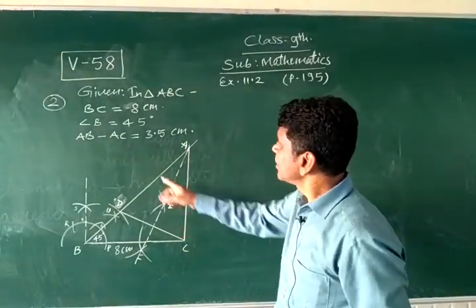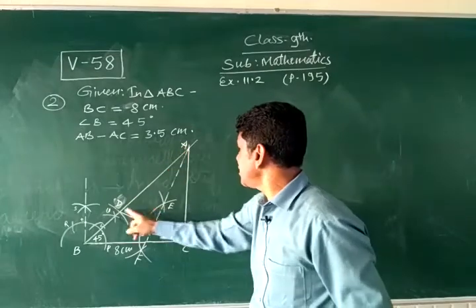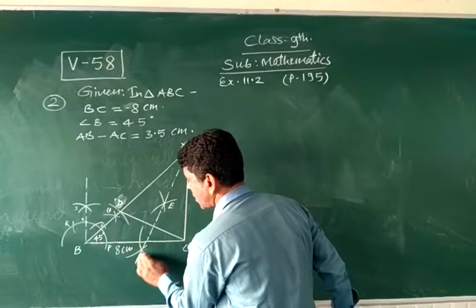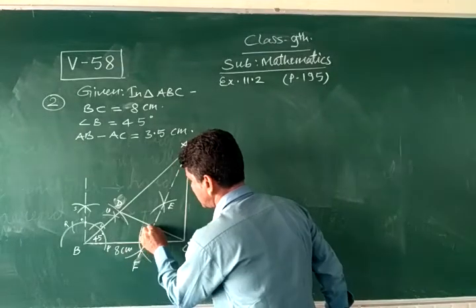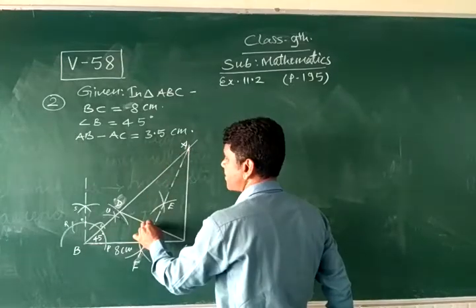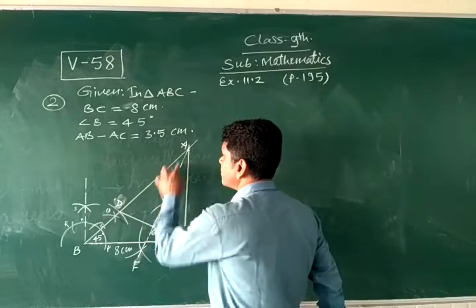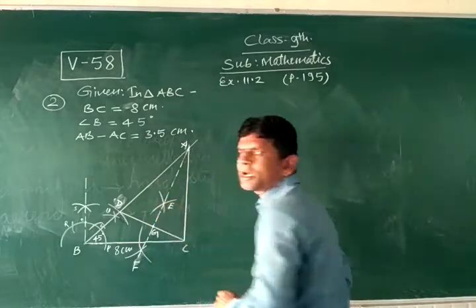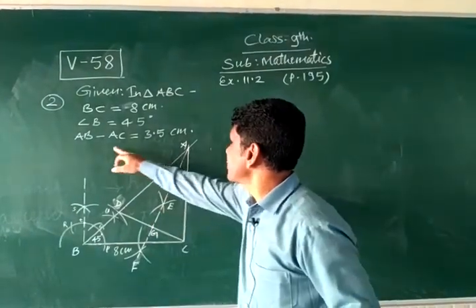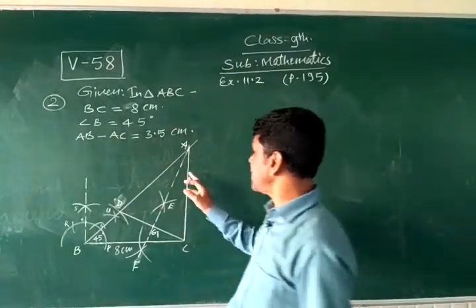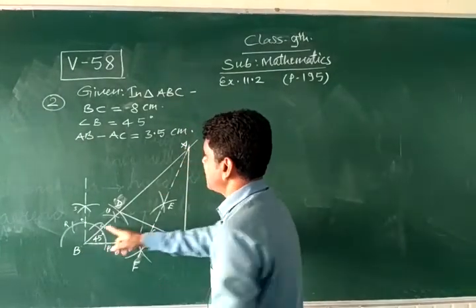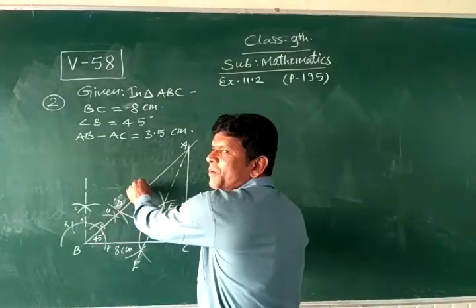And this line intersecting at A, this will become A, and join AC. Then AD is equal to AC, because this line EF, we give the name G at the intersection, this G is perpendicular, so these two sides will be equal. AB minus AC is 3.5.